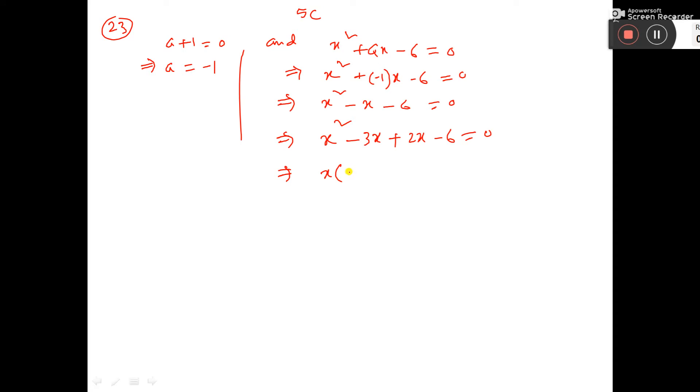Then x into x minus 3, plus 2 into x minus 3. If you take common, then x minus 3. So x minus 3 into x plus 2 is equal to 0.